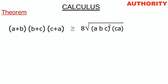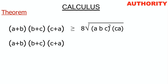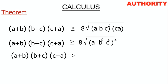Now let's multiply ab · bc · ca. We have ab times bc which gives ab²c. Then multiplying by ca gives a²b²c². So (a+b)(b+c)(c+a) ≥ 8√(a²b²c²).